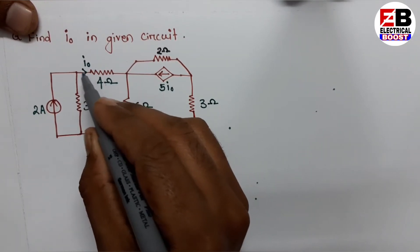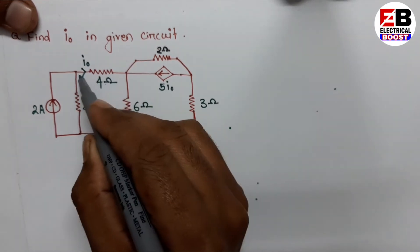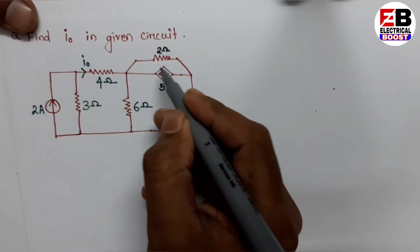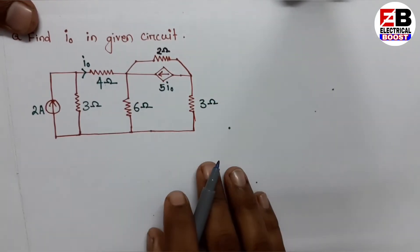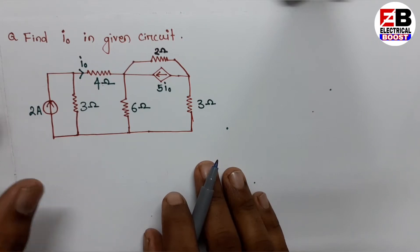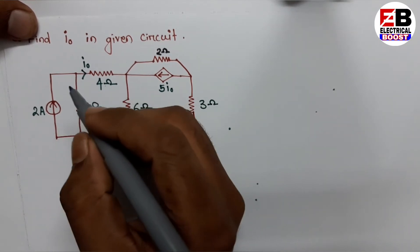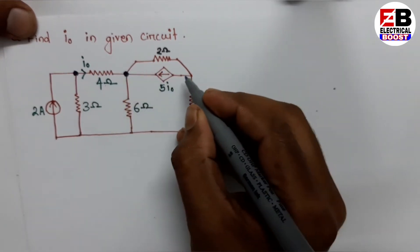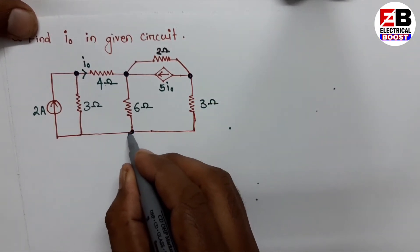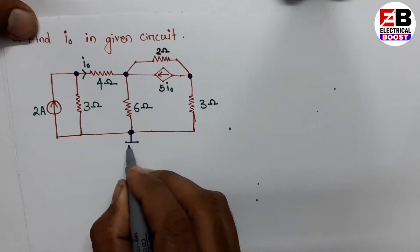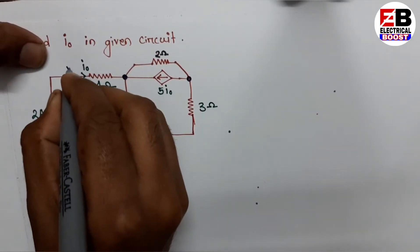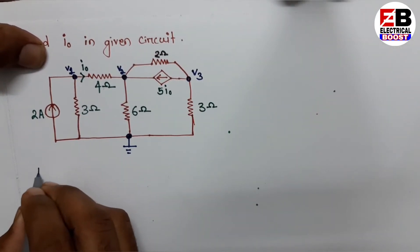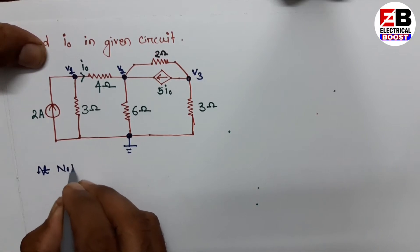We need to find the current I-naught in the given direction. A dependent source is also present in the circuit. We can apply supermesh, but here we use nodal analysis. First, we identify the non-reference nodes. There are three non-reference nodes: node 1 labeled V1, node 2 labeled V2, and node 3 labeled V3, with one reference node.